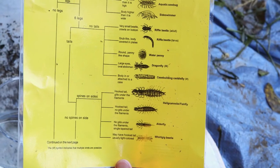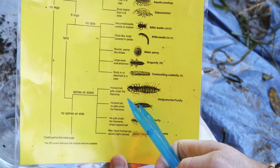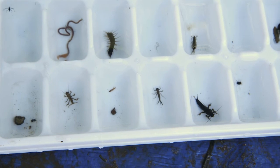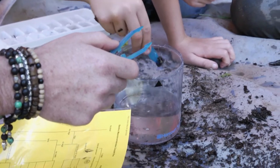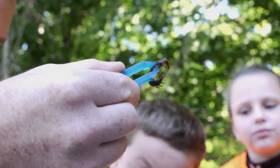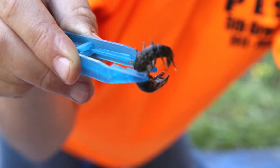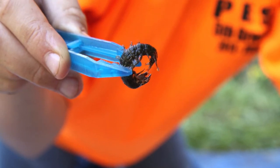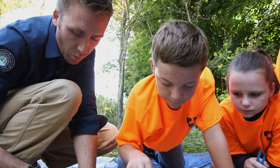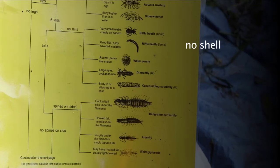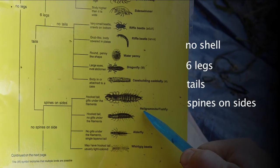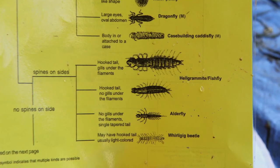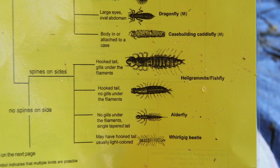We've got two different options here on this dichotomous key — it's a great word. We need to identify various different characteristics of the different invertebrates. The first one is: does it have a shell? Nope, so no shell. Does it have legs or no legs? It has legs — it's actually got six legs. Does it have a tail? Yeah. If it's got no shell, six legs, tails, and spines on the side, it's either a helgramite, an alderfly, or a whirligig beetle.